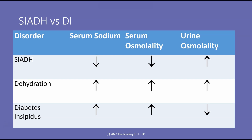In diabetes insipidus, we have a high serum sodium, high serum osmolality, and a low urine osmolality — the patient is diuresing. We can differentiate it from dehydration by looking at urine osmolality; in dehydration, urine osmolality will also be high. We can differentiate it from SIADH because the serum sodium and serum osmolality will be different.